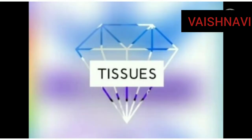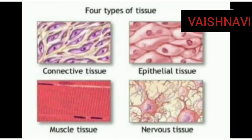First, we want to know what is tissue. Tissue — a group of cells that are similar in structure and work together to do a specialized function is called tissue. In animal tissue, they are classified into four types.